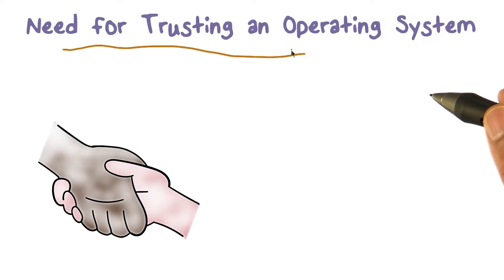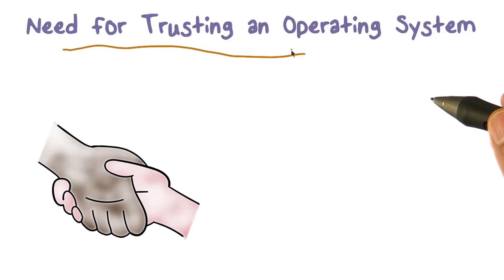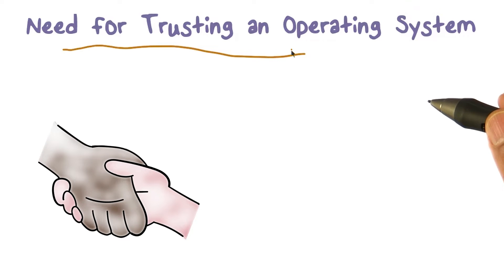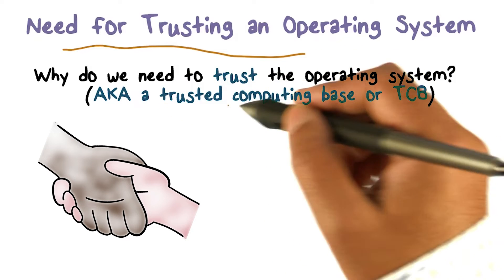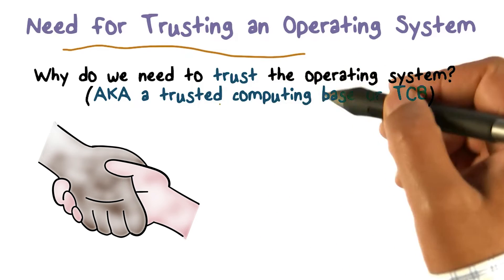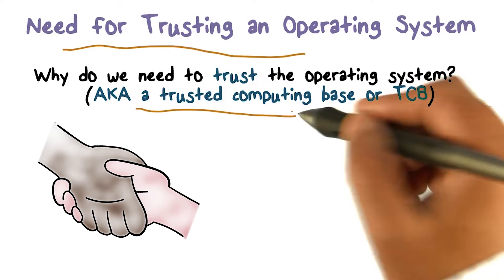Why do we need to trust the operating system? I'm going to talk about exactly what it means to trust a system, and what differentiates an operating system from other applications that may not be trusted. Not only do we need to trust it, but we actually call it a trusted computing base.